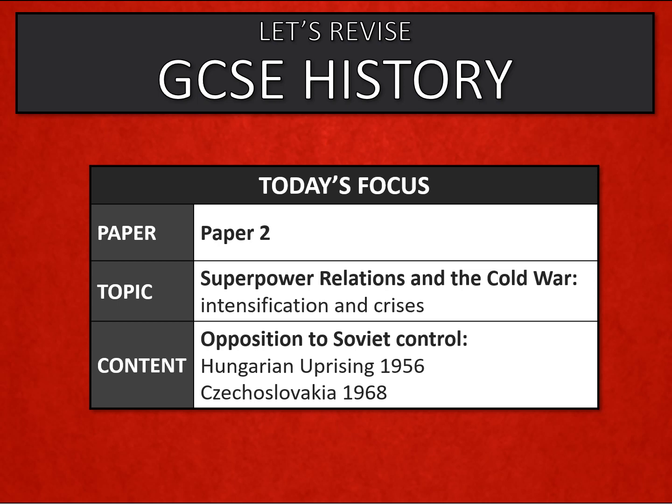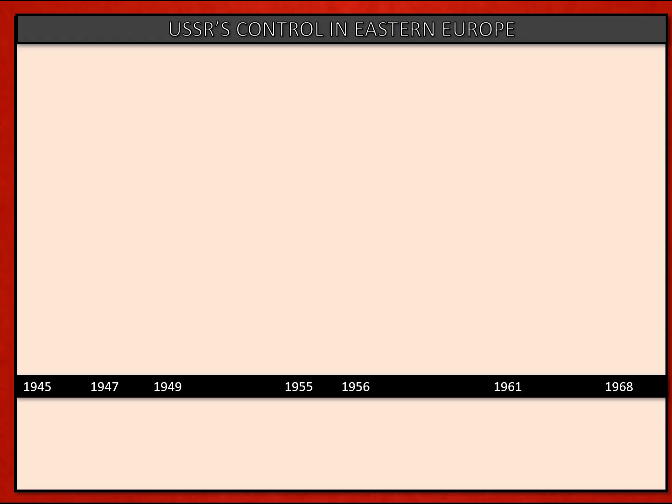Hello and welcome to a GCSE History Revision tutorial. We're going to look at superpower relations and we'll be looking at two examples of opposition to Soviet control: the Hungarian uprising in 1956 and events in Czechoslovakia in 1968.